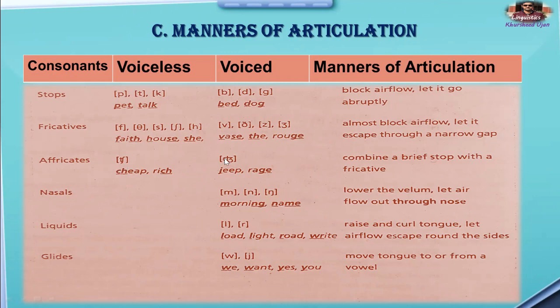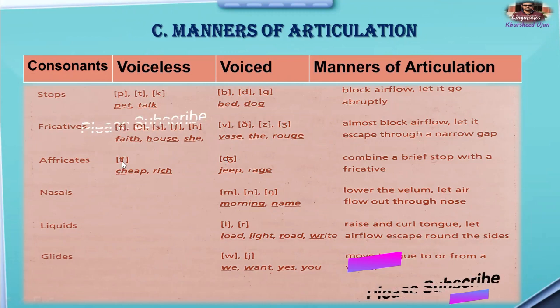Here is another manner of articulation: affricate sounds. Affricate sounds are the 'ch' sound and the 'j' sound — 'ch' as in 'cheap' and 'rich', and 'j' as in 'jeep' and 'rage'. These sounds are pronounced by combining a brief stop with a fricative. These are called affricate sounds.